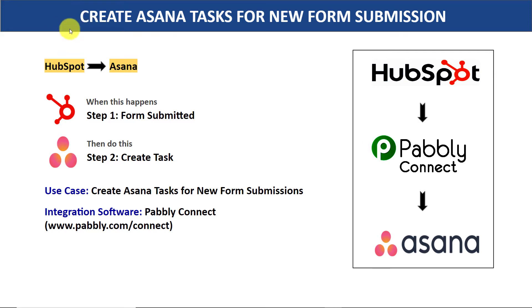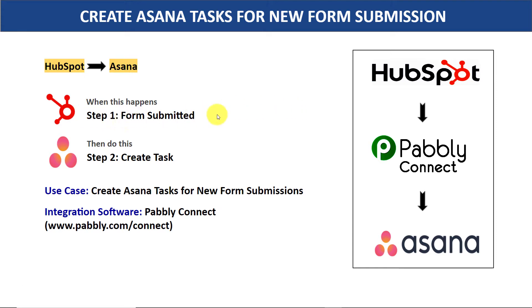Hello everyone. In this video, we will learn how to create Asana tasks for new form submissions. Imagine you are using HubSpot forms to take complaints about your products. Once a complaint has been submitted in HubSpot forms, it will create a task in Asana. The first choice is to manually copy all the details from HubSpot and create a task in Asana, but this approach is very repetitive and tiresome. I would suggest bringing in some automation so that when a form is submitted in HubSpot, it will automatically create a task in Asana.